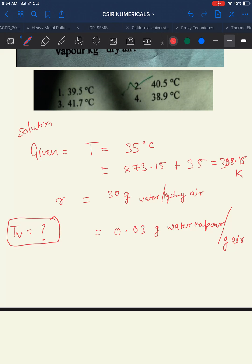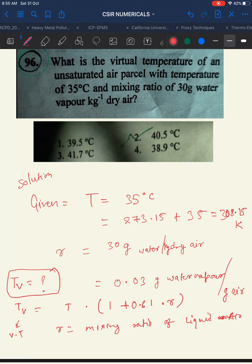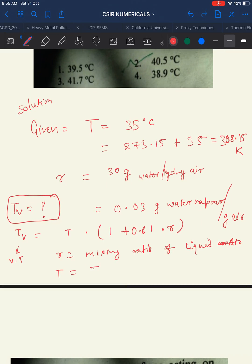The formula for virtual temperature is TV = T × (1 + 0.61 × R), where TV is the virtual temperature, R is the mixing ratio, and T is the temperature of the parcel. Just put in the values — it's very easy. All you have to do is memorize this formula.